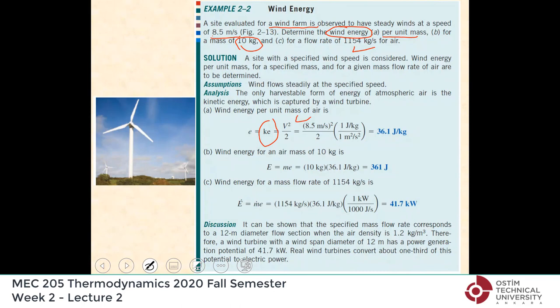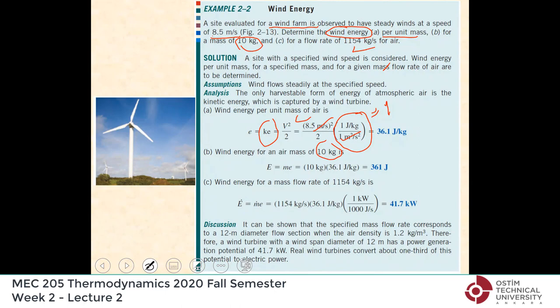Doing the unit conversion gives 36.1 joules per kilogram. The conversion factor is: 1 m²/s² equals 1 J/kg, so the units cancel and you end up with joules per kilogram. For 10 kilograms of air, multiply by 10 to get 361 joules.